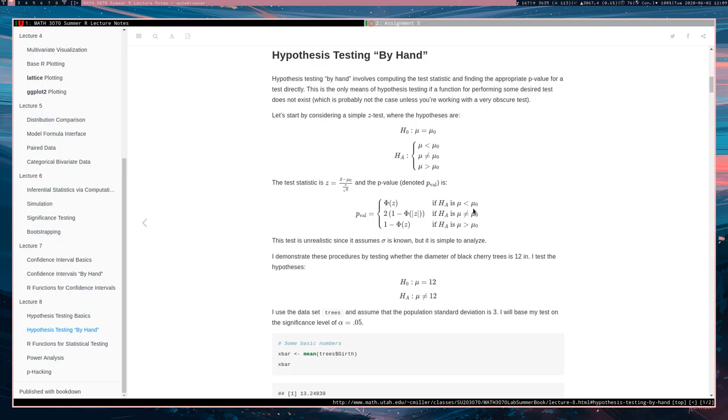But the P value will be either phi of Z if the alternative says that mu is less than mu naught, 2 times 1 minus phi applied at the absolute value of Z if the alternative says that mu is not equal to mu naught. By the way, phi is the CDF of the standard normal distribution. And if the alternative says that mu is greater than mu naught, then the P value will be 1 minus phi of Z.